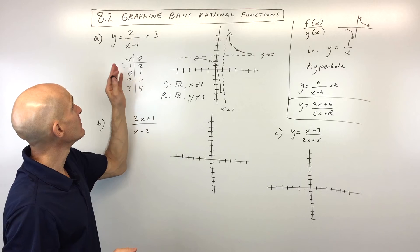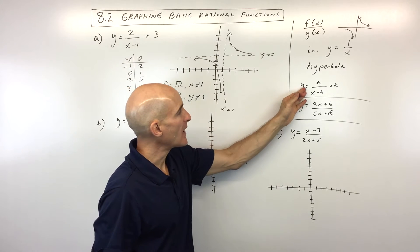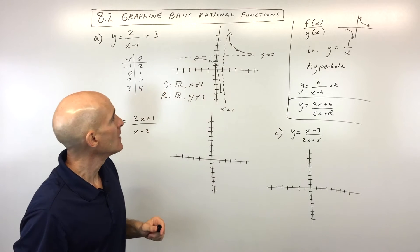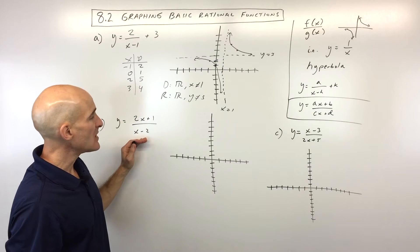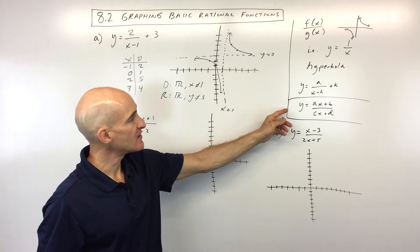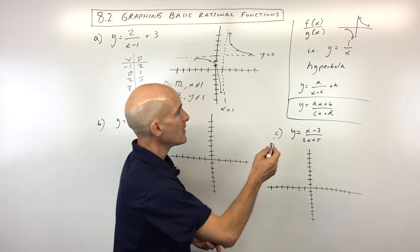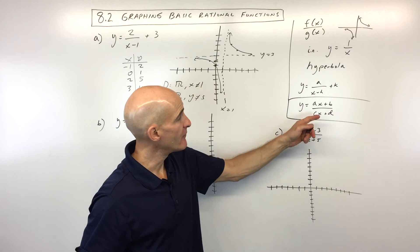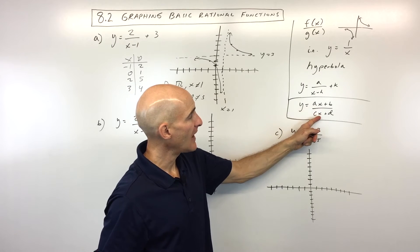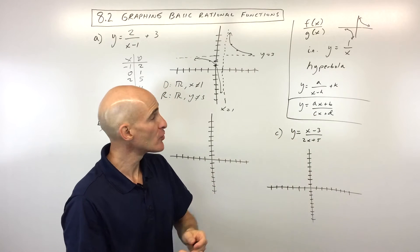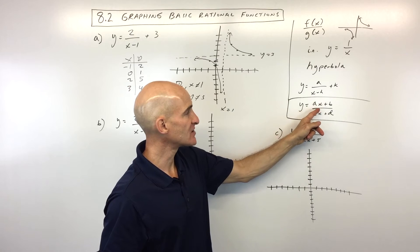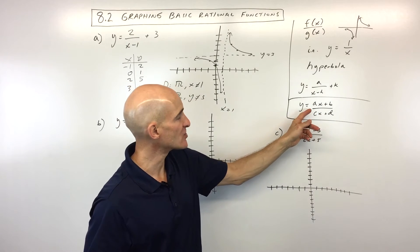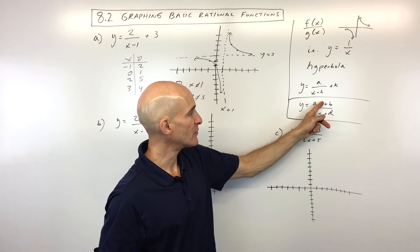Now let's look at a slightly different form: y equals ax plus b over cx plus d, where there's a variable x in both the numerator and denominator — both just to the first power, linear, not squared or cubed.